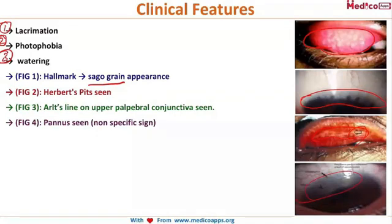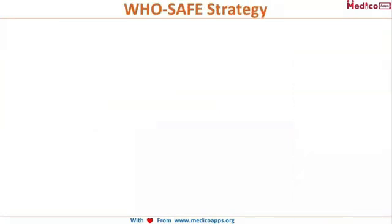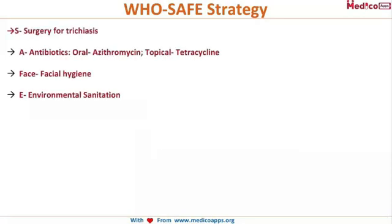However, pannus is not a specific sign. WHO has devised the SAFE strategy for management of trachoma: S stands for surgery for trichiasis, A stands for antibiotics — oral azithromycin is preferred, topical tetracyclines are used — F is for facial hygiene, and E stands for environmental sanitation.